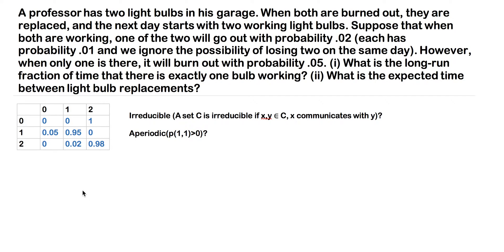A professor has two light bulbs in his garage. When both are burned out, they are replaced, and the next day starts with two working light bulbs. Suppose that when both are working, one of the two will go out with probability 0.02. Each has probability 0.01, and we ignore the possibility of losing two on the same day.